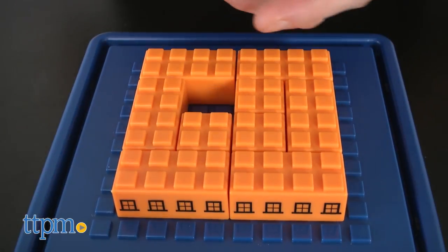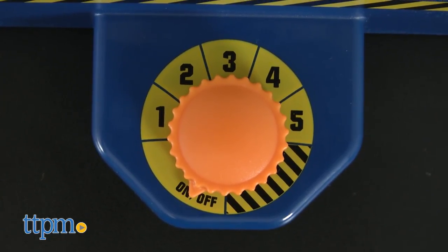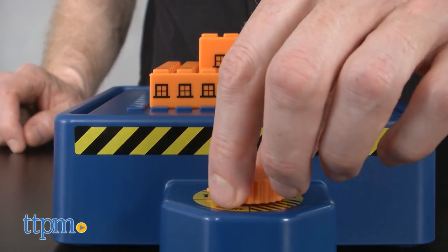The blocks stack easily and there is a dial on the earthquake simulator marked with levels 1 through 5. Once you build your mini city, turn the dial. The higher the number, the more devastating the earthquake is.